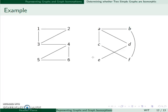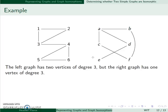For example, here I have two different graphs. I see that this vertex here has degree 3, and this vertex here has degree 3. However, in the right graph, A is the only vertex with degree 3. So these cannot be isomorphic.